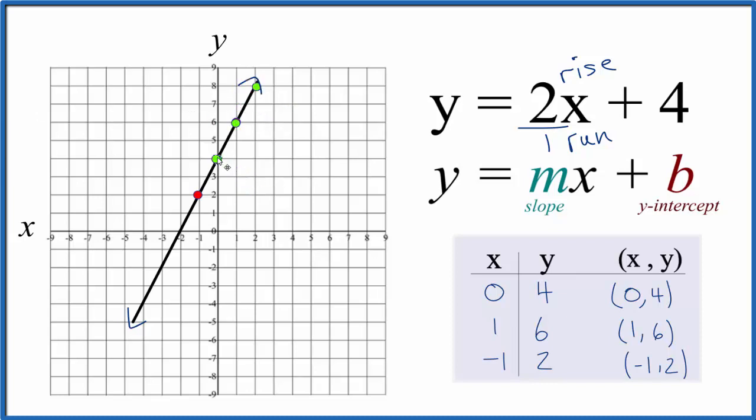Likewise, we could go here and go down 2 and over 1 in the opposite direction. And we could keep doing this, down 2 over 1, down 2 over 1. And all of these points, they fall on the line y equals 2x plus 4. So we know we did this correctly.